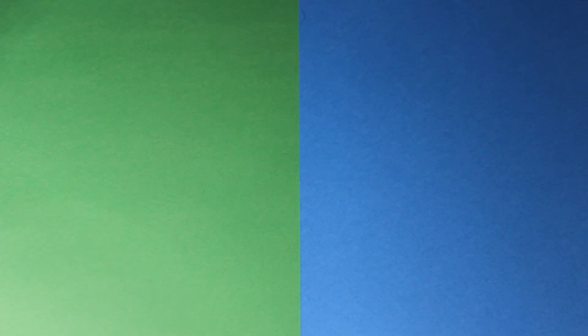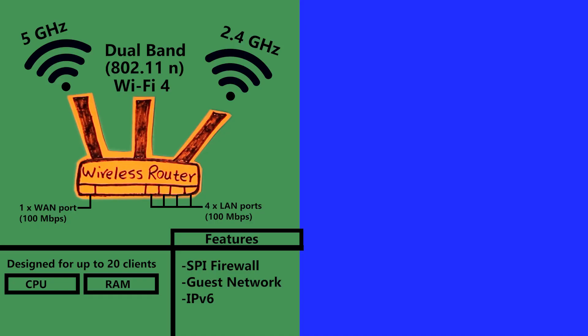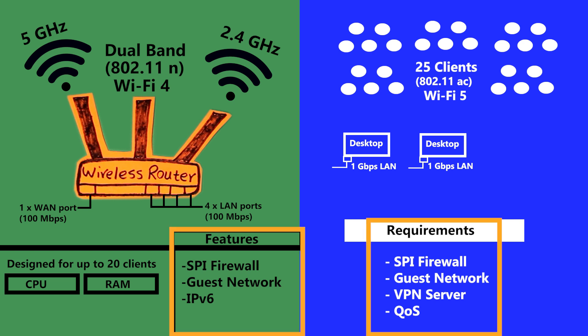The networking equipment I use must be capable of handling my networking needs without being overwhelmed. For example, imagine this is my wireless router and these are my network requirements. I can immediately see that this wireless router doesn't have some of the features I need, such as a VPN server and quality of service, which is not good.